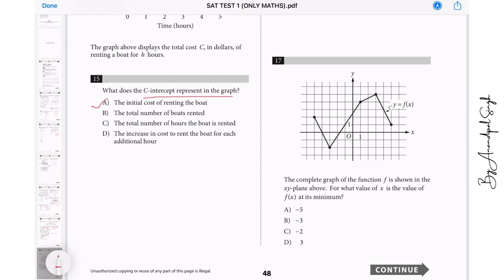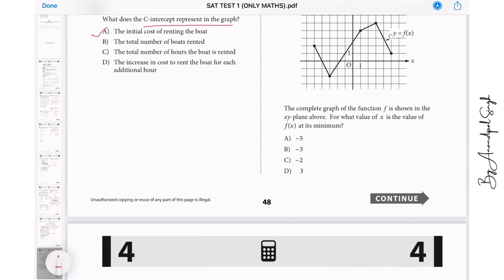Let us go to question number 17. The complete graph of the function is shown in the xy plane. For what value of x is the value of f at its minimum? So the minimum value over here is this one. We need to find value of x. I think this is minus 3 and the minimum value is minus 2. So I will go with minus 3 because it's asking about the value of the x.